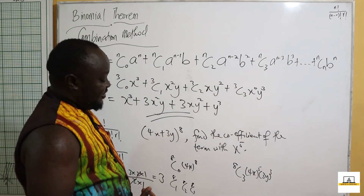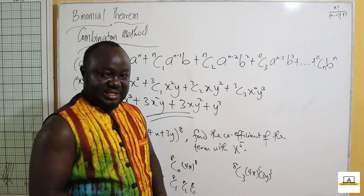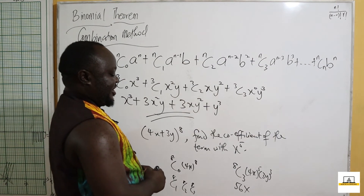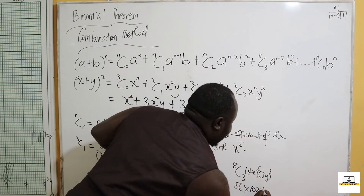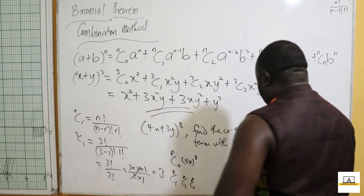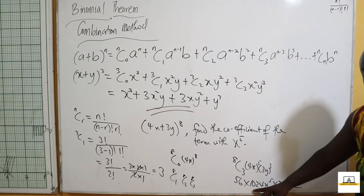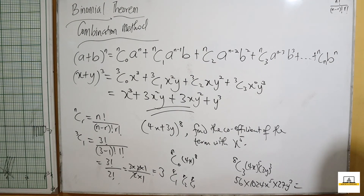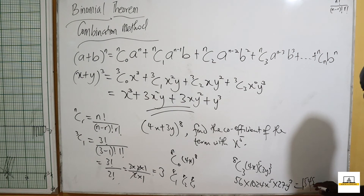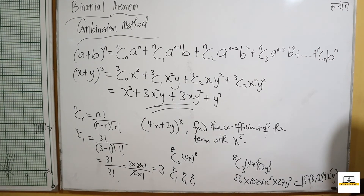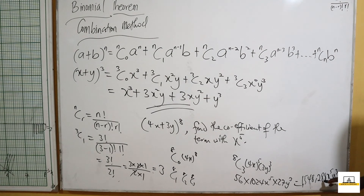So the coefficient of x⁵ is: 8 combination 3 times (4 raised to the power 5) times (3 raised to the power 3). 8 combination 3 on the calculator gives 56. 4 raised to the power 5 is 1024. 3 cubed is 27. So our coefficient is 56 times 1024 times 27, which gives us 1,548,288. Therefore the term is 1,548,288 x⁵y³.